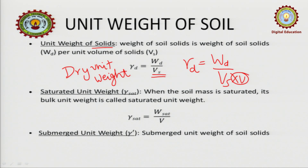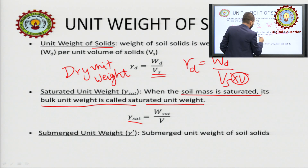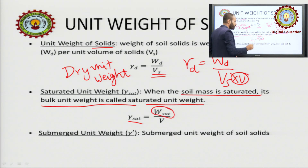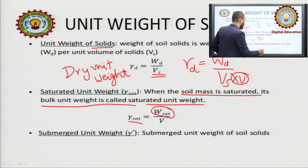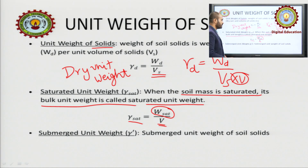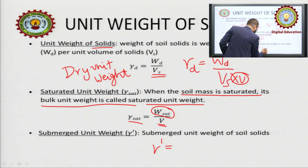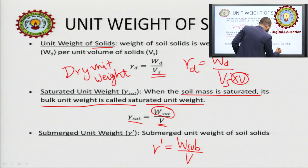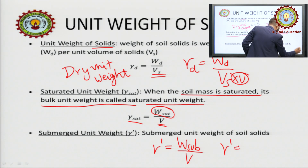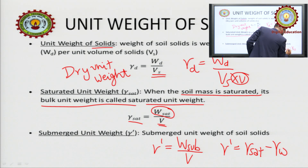Saturated unit weight, gamma-saturated: when the soil mass is saturated, its bulk unit weight is called saturated unit weight. It is W-saturated upon V, where V is total volume. Submerged unit weight is represented by gamma-dash. The relation is: gamma-dash equals gamma-saturated minus gamma-w. This is an important relation.